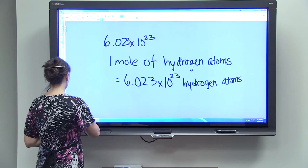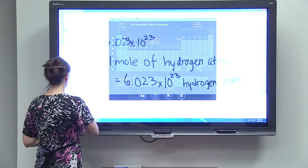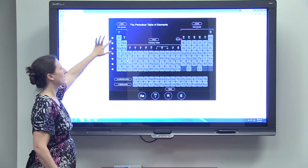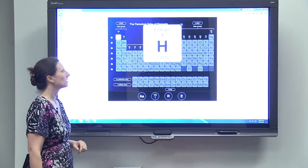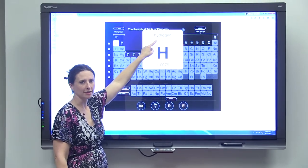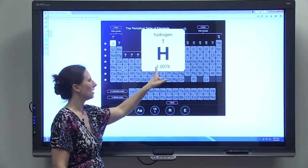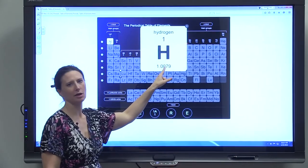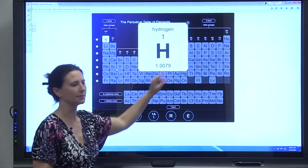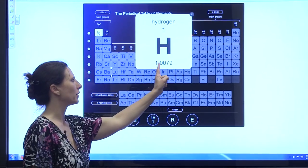So let's take a look at our periodic table. We'll look at hydrogen. So hydrogen has an atomic number of one, and it has an atomic mass of 1.00. Let's just call this 1.01. So hydrogen has an atomic mass of 1.01.